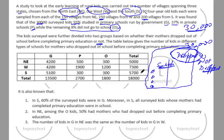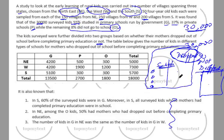We know the total is 30,000. So those whose mothers did not drop out total 30,000 − 18,000 = 12,000. When we add the two groups together, we get the overall total of 30,000.